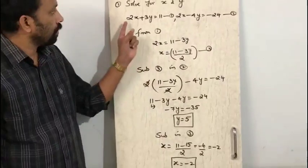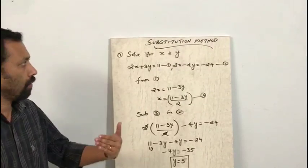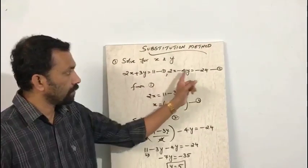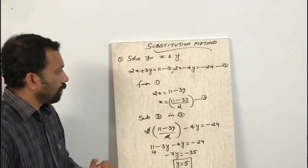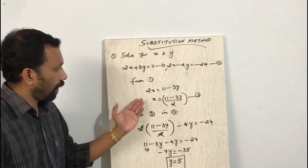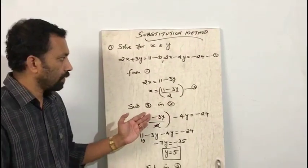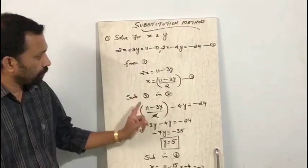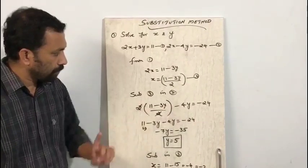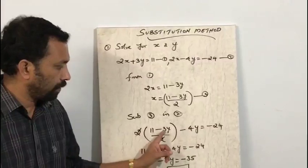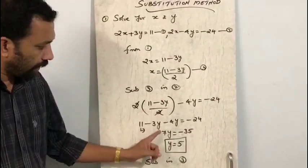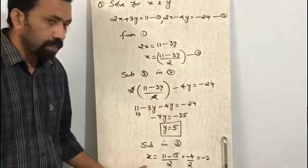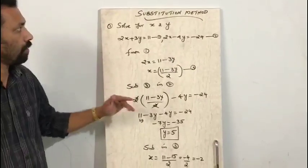So what are the steps involved in this method? Step one: obtain the two equations and mark them as first and second. Step two: from the first equation, write x in terms of y or y in terms of x, and mark it as equation number three. Step three: substitute equation 3 into the second equation — this gives a linear equation in one variable, from which we easily get the value of y. Then substituting back into equation 3 gives us the value of x.